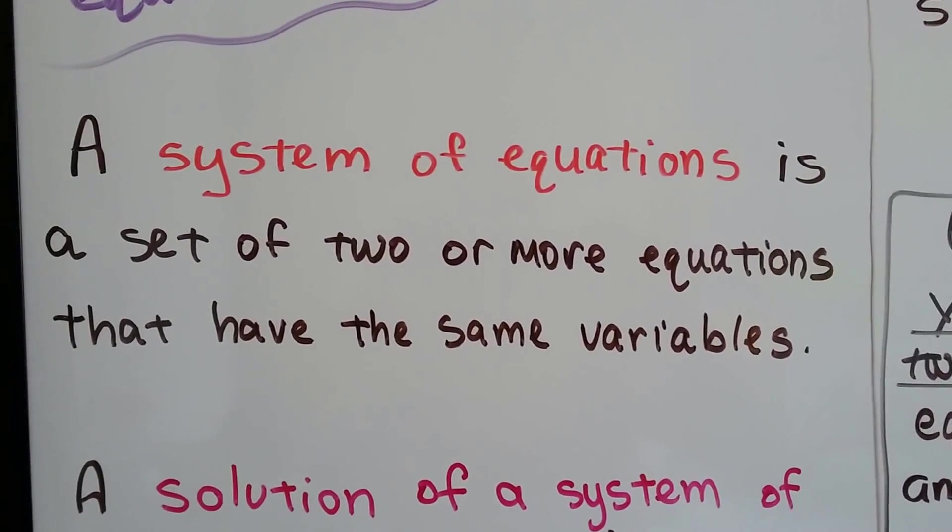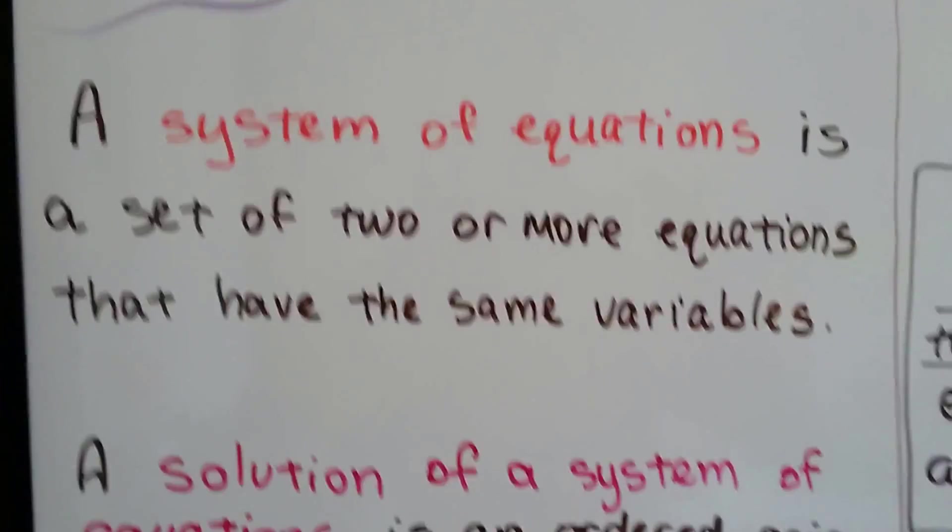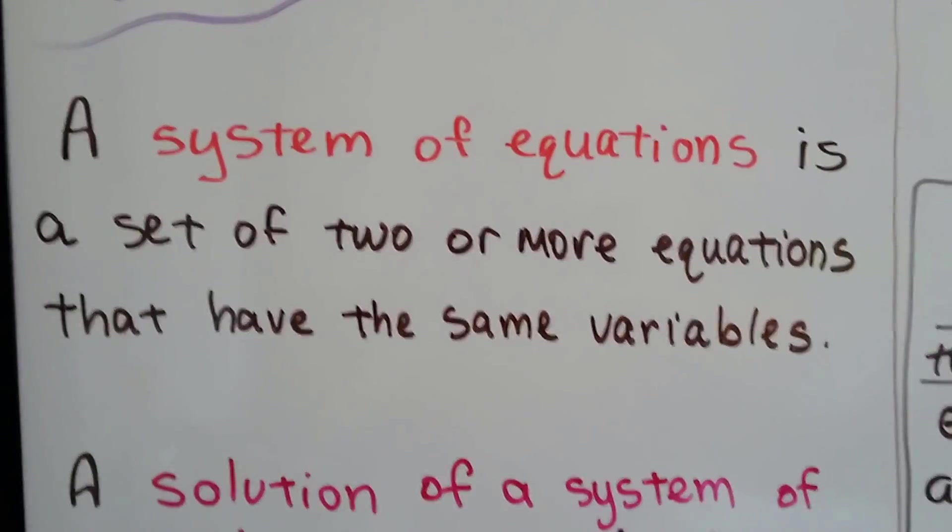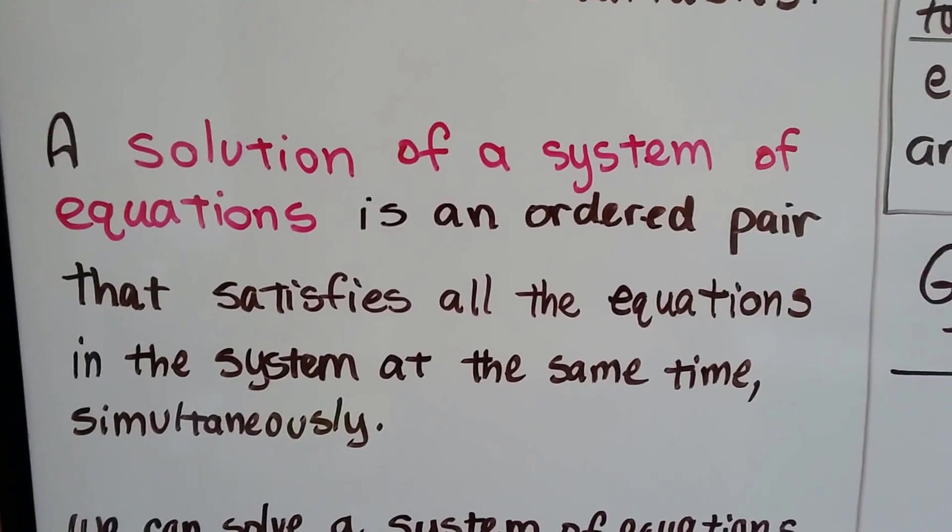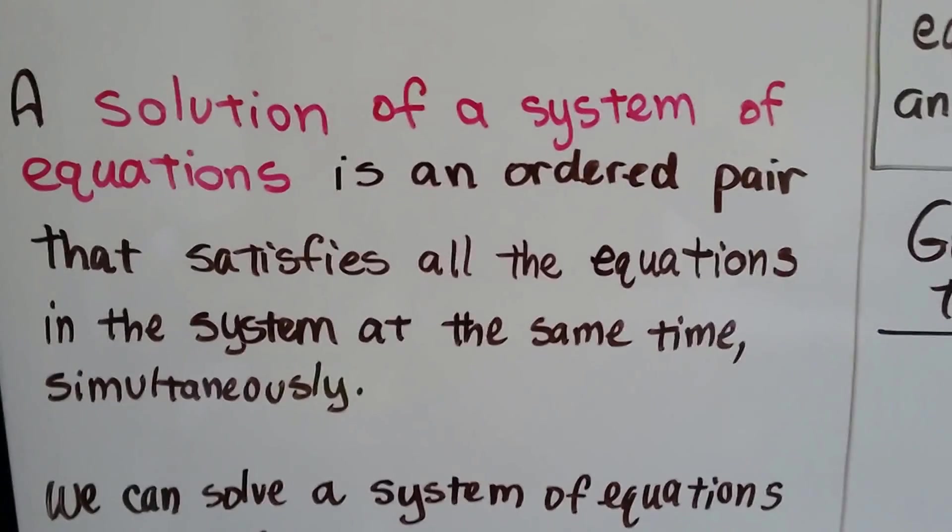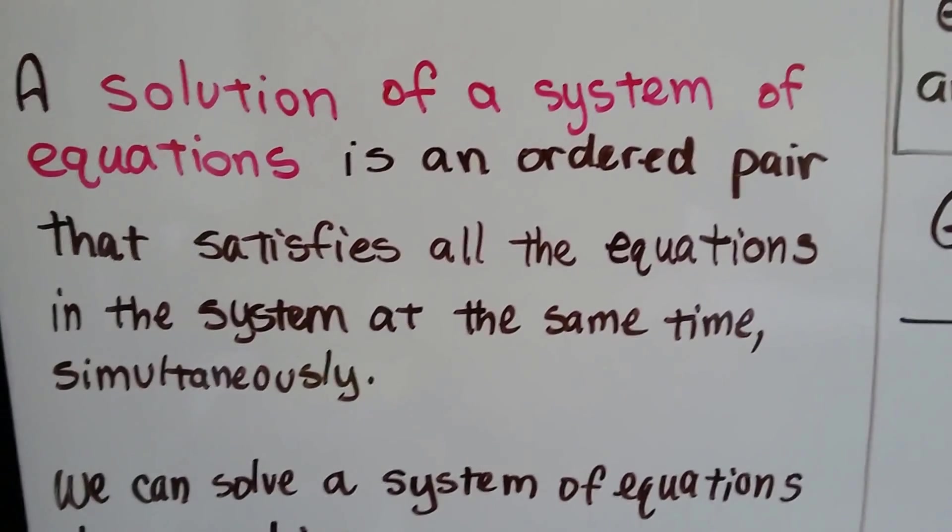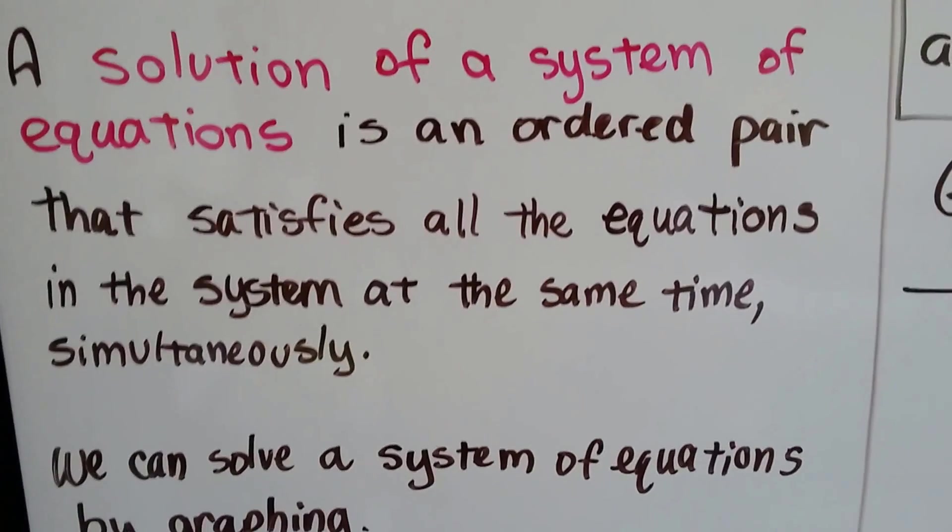A system of equations is a set of two or more equations that have the same variables. And a solution of a system of equations is an ordered pair, x and y, that satisfies all the equations in the system at the same time, simultaneously.